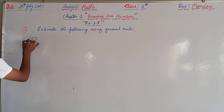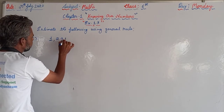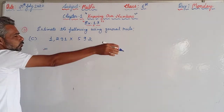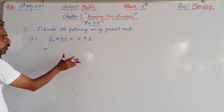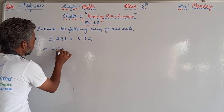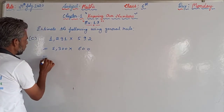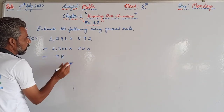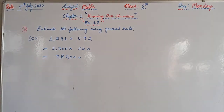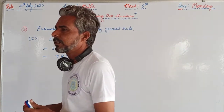The third part, C, is 1,291 × 590. Similarly, by using the number line, we can round off these two numbers. If we round off 1,291 to the nearest hundred, we get 1,300. If we round off 590 to the nearest hundred, we get 600. If we multiply 1,300 × 600, there are four zeros, giving us 780,000. Afterwards, we place the commas. So this is the method by which we can find the product of two numbers using estimation.